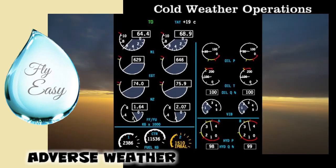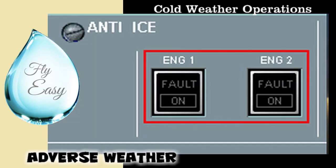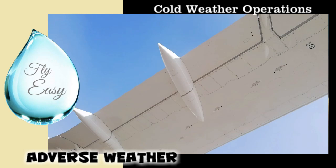Perform the normal engine start procedures, but note that oil pressure may be slow to rise. Displays may require additional warm-up time before engine indications accurately show changing values, and displays may appear less bright than normal. Engine anti-ice must be selected on immediately after both engines are started and must remain on during all ground operations. When icing conditions exist or are anticipated, do not rely on airframe visual cues before activating engine anti-ice — use the temperature and visible moisture criteria. Check the flight controls and flaps to ensure freedom of movement.